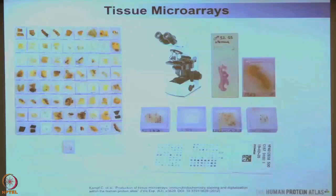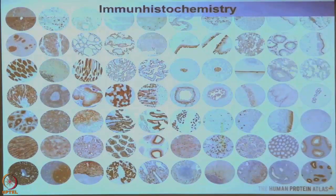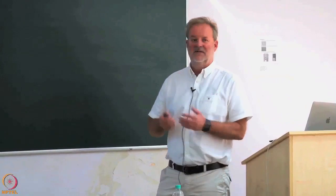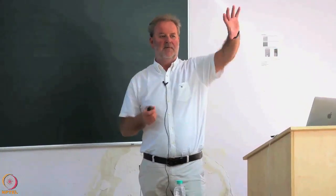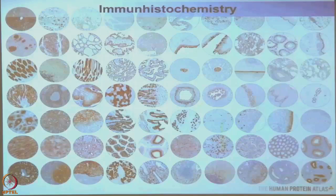Tissue microarrays are essential — handling 700 blocks for each antibody would have been impossible, while handling four blocks is absolutely possible. Immunohistochemistry is our basic method for getting protein expression profiles in tissues. It is a great method for spatial data, but it is not a method for quantitative data. However, nothing like immunohistochemistry can tell you which structures and subtypes of cells express a certain protein, and it gives you a relative sense of expression levels between cell populations.